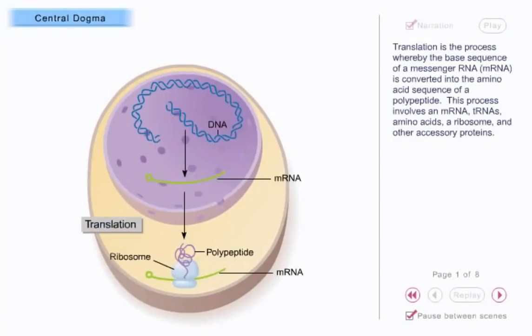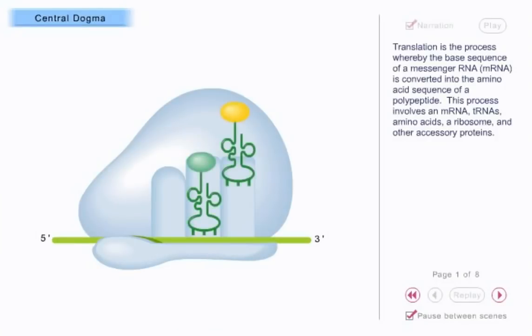Translation is the process whereby the base sequence of a messenger RNA is converted into the amino acid sequence of a polypeptide. This process involves an mRNA, tRNAs, amino acids, a ribosome, and other accessory proteins.